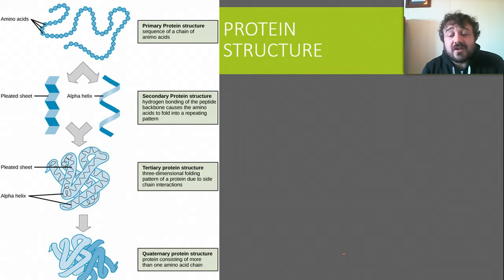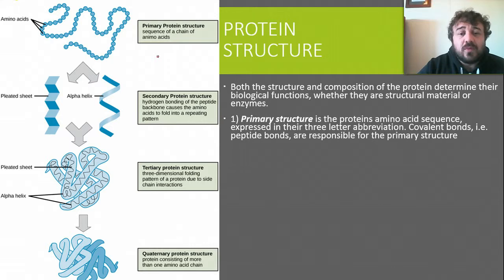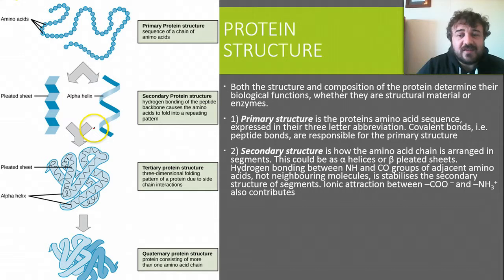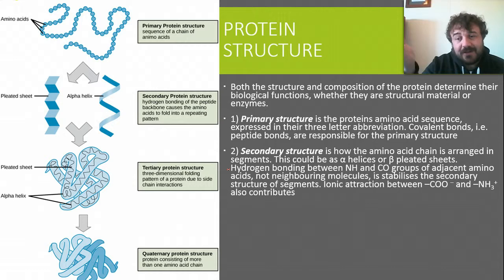Proteins have a structure. You get primary structure, which is just the sequence of amino acids. You've then got the secondary structure, which is either alpha helices or beta pleated sheets. This is caused by the hydrogen bonding between the carbonyl groups and the NH bonds — hydrogen bonding between neighbors within the one polymer — and it actually stabilizes the structure. Without these bonds, proteins tend to become very unstable and fall apart.